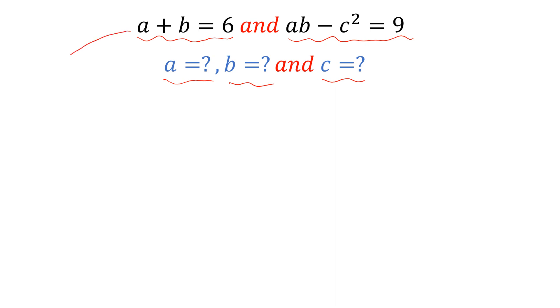Look at this equation. From this equation, we can write B is equal to 6 minus A. Now, we can put this value, B is equal to 6 minus A, in this equation. So we can write it A into 6 minus A minus C square is equal to 9.